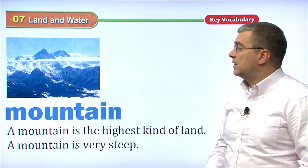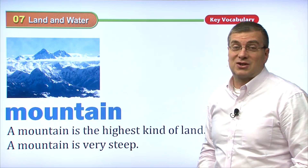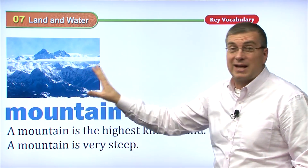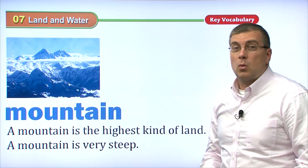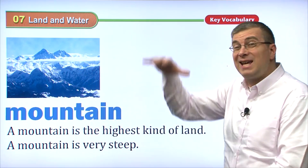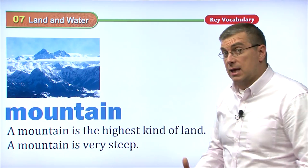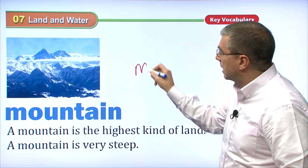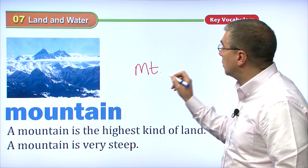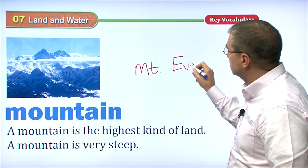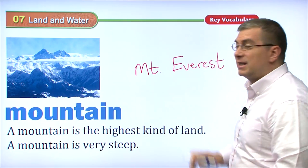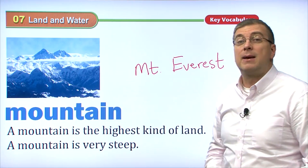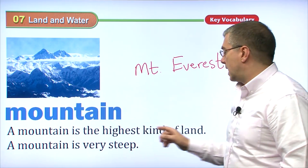The next feature we're talking about is a mountain. We saw a mountain just before when we saw the lake in the mountains. We can also just look at mountains as a feature of land. A mountain is the highest kind of land. Where is the highest place on earth? Mount Everest — MT stands for mountain. Mount Everest is the highest place on land. It's in the Himalayas between China and India, in the Himalayan mountains. A mountain is the highest kind of land.